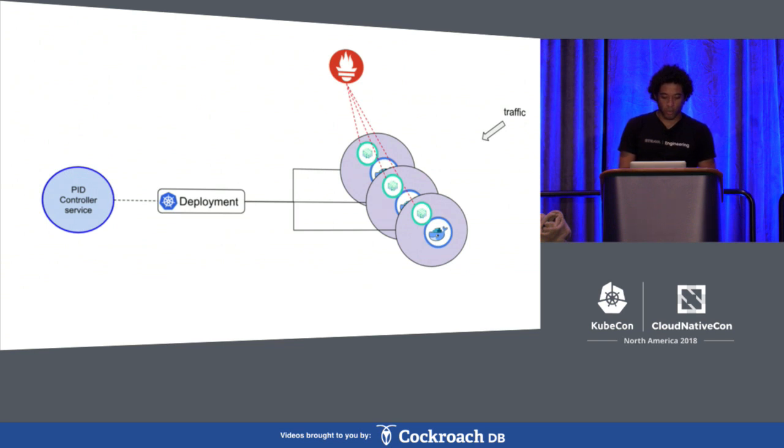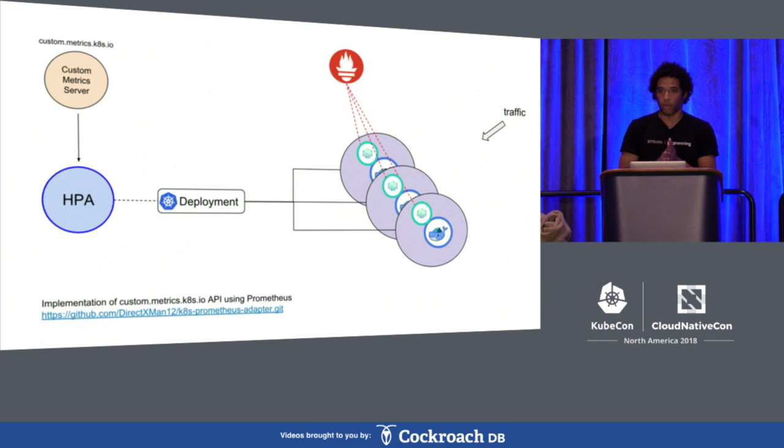And finally, you can't use our super awesome PID controller just yet. You would use the Kubernetes horizontal pod autoscaler, which uses a different algorithm and a Prometheus implementation of the custom metric server. And there's a link down there that goes into more details.